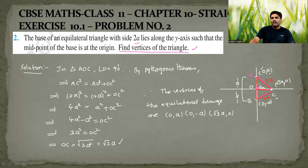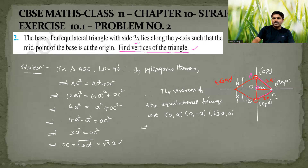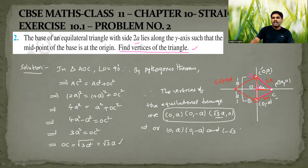You can also show the same triangle on the other side. If you slant the triangle to this side, the vertices (0, a) and (0, −a) will not change, but the third vertex will now be on the negative x-axis. Therefore, those coordinates will become (−√3a, 0). So the second set of vertices is (0, a), (0, −a), and (−√3a, 0). In this way, you can find the coordinates of the vertices of the given equilateral triangle.